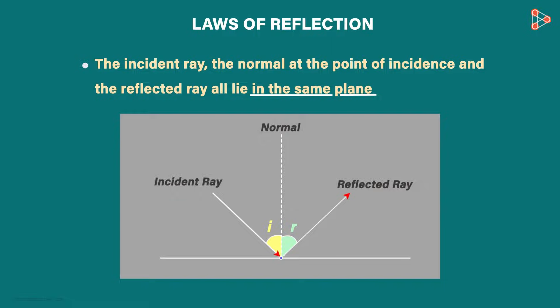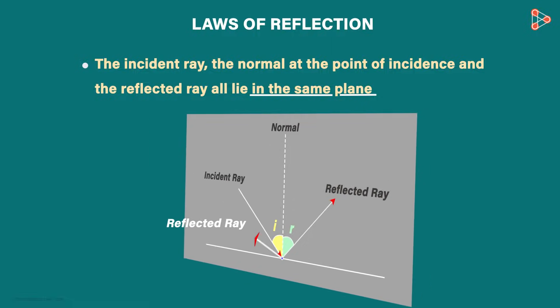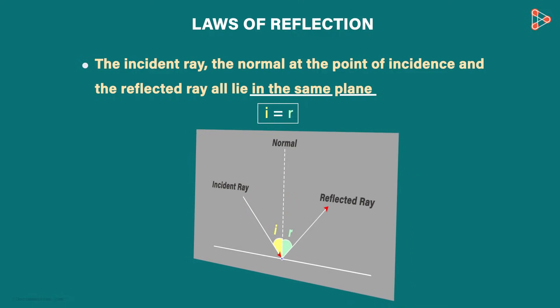For example, if the reflected ray is in this direction instead of this, then the diagram will look like this. The incident ray and normal are in the plane of the paper, whereas the reflected ray is not in this plane. This violates our second law and hence this ray will not be reflected in that direction. This is just not possible. It can only be like this. I will be equal to R and they will lie on the same plane.